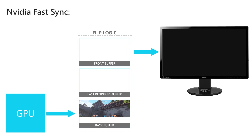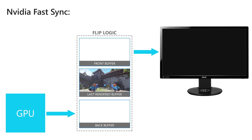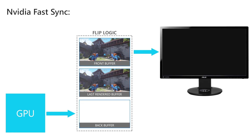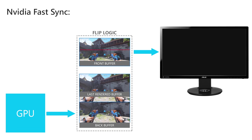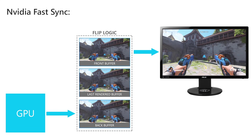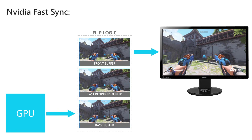So the GPU renders a new frame into the backbuffer, which then gets renamed to the last rendered buffer, and the last rendered buffer becomes the backbuffer into which the GPU renders the next frame. Once that is done the buffers change their names again, so we have an image in the frontbuffer and the last rendered buffer, while the GPU renders the next frame into the backbuffer. Once the GPU finishes rendering, it becomes the last rendered buffer and the GPU renders the next frame. In the meantime there might be a scan happening in the frontbuffer, which sends the image to the monitor. Once that scan is done, the last rendered buffer becomes the new frontbuffer, which waits to get scanned and sent to the monitor.